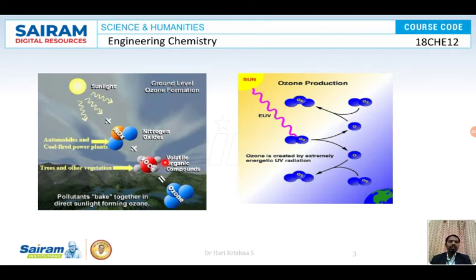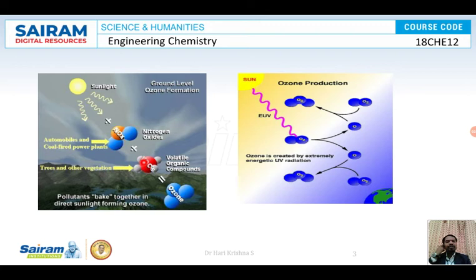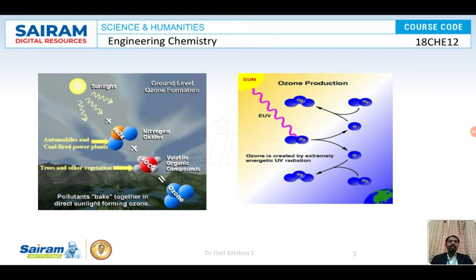At ground level, how is ozone formed? Ozone is also present in the atmosphere at ground level. Automobiles and coal-fired plants produce oxides of nitrogen, and these oxides of nitrogen combine with VOCs — volatile organic compounds — which are produced from trees and other vegetation. They combine in the presence of sunlight and ozone is formed. This is how ozone is produced at the earth's surface. Ozone is very good in the stratosphere, but if ozone concentration increases in the biosphere it is dangerous. We are not supposed to inhale ozone. If we inhale ozone, it leads to death.